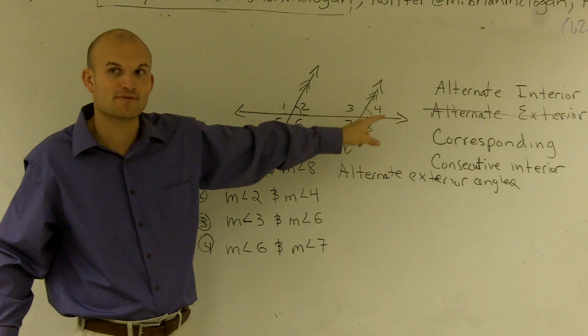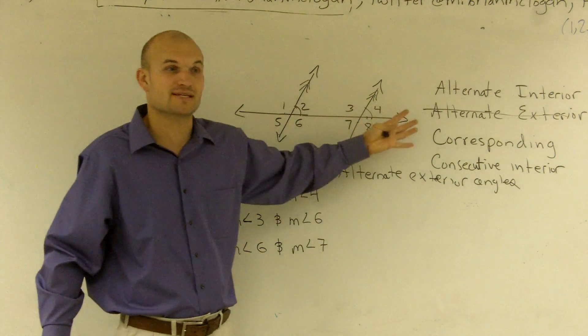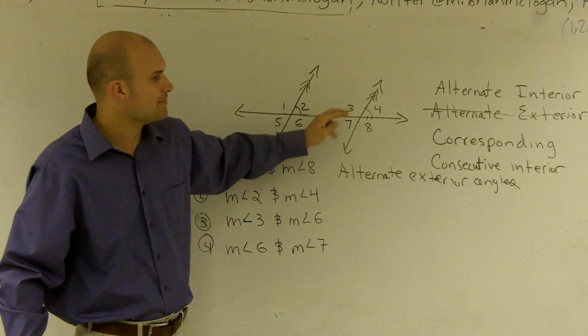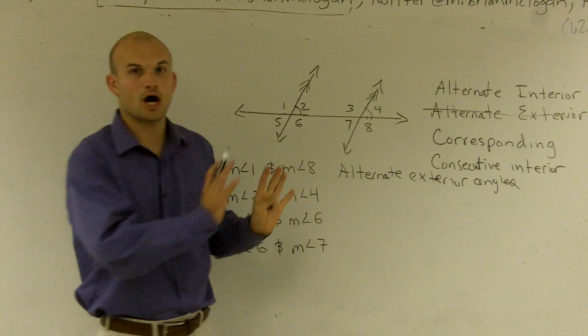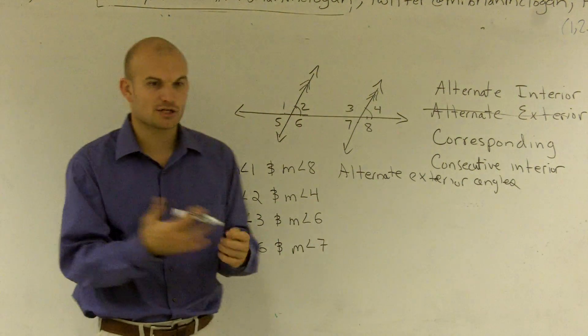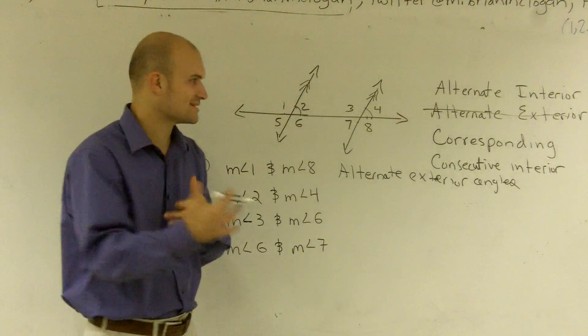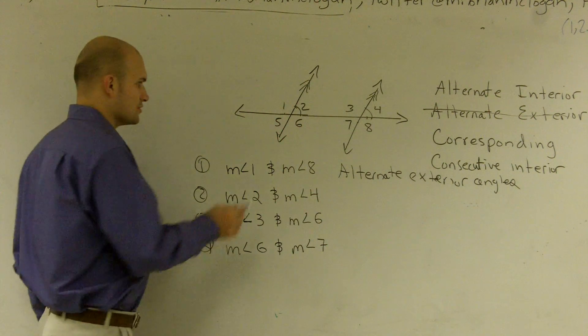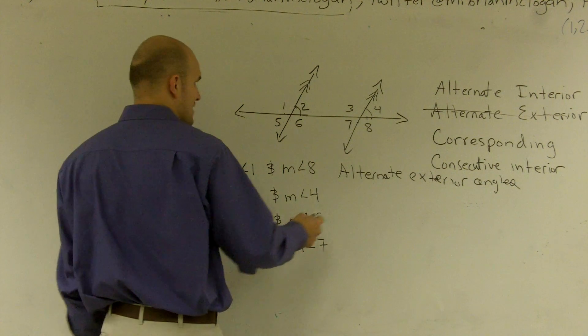you can notice that the angle number four over here is also in the exact same corner. So therefore what you can say is that both of these angles are both in the upper rightmost corner. So what they are is they're corresponding to each other. They're exactly in the exact same position for both angles. So these two angles are what we call corresponding angles.